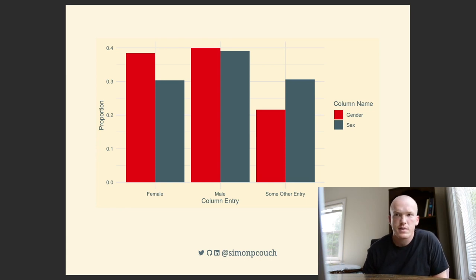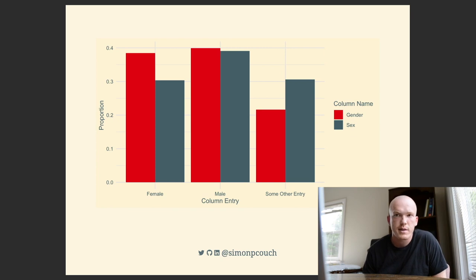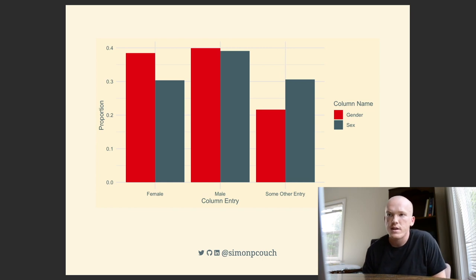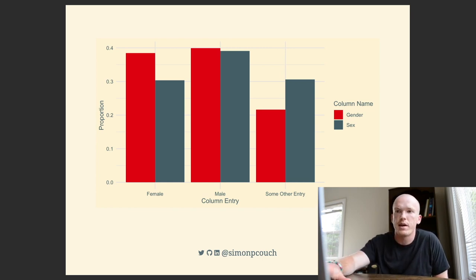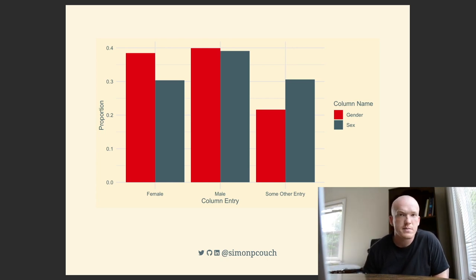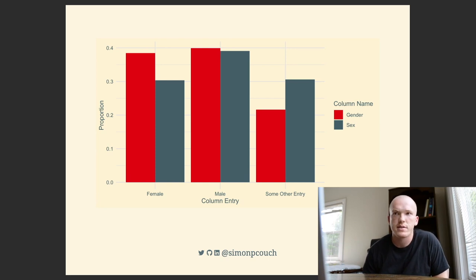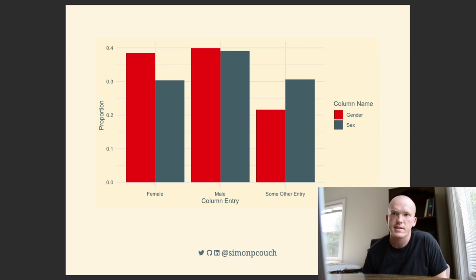I would hope that columns called sex would contain labels understood to describe sex categories, such as intersex, female, and male. The same goes for gender — I might hope to see entries like non-binary, woman, and man. To address this question, I downloaded 2,500 packages from CRAN and searched for columns describing sex and gender effects inside of the data they export. Regardless of column name, the entries in those columns are nearly exactly the same.